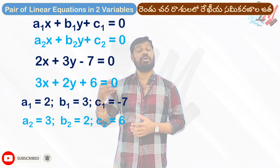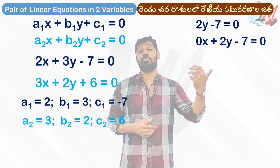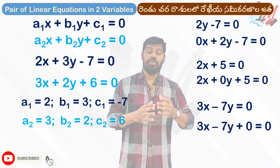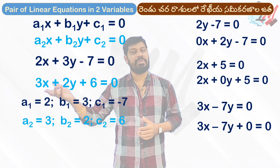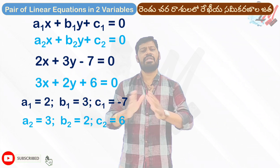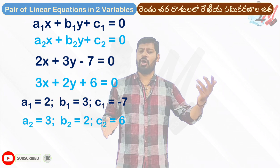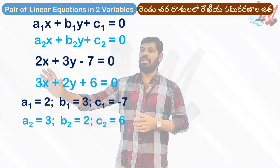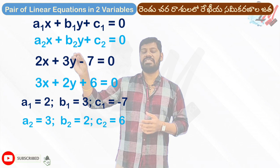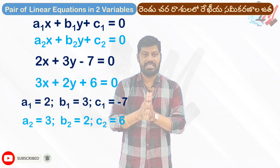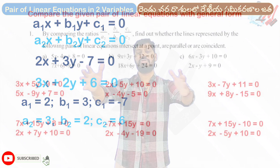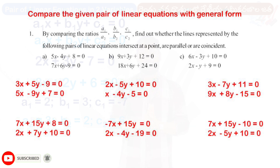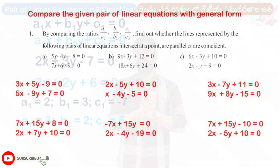As you learned in the 9th class, you compare the equations with the x-term, y-term, and constant term. You can replace terms accordingly to extract a1, b1, c1, a2, b2, c2 values. You can see all these problems in the textbook.